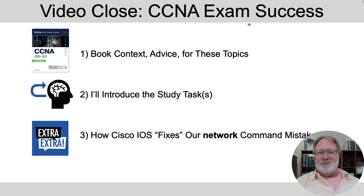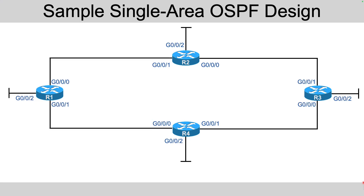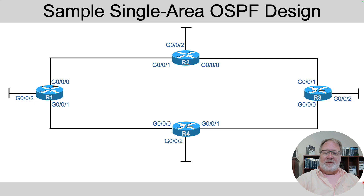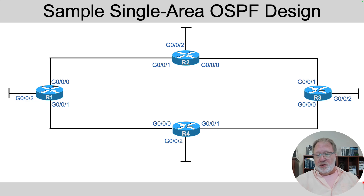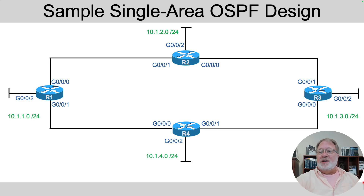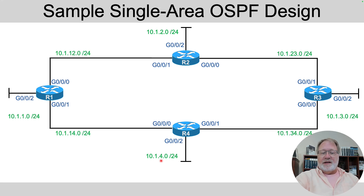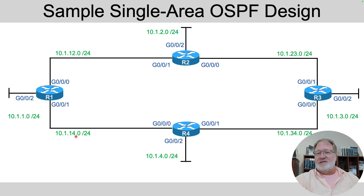Let's jump in and learn about basic OSPF configuration. Let me start by describing the topology. I'm going to have these four routers, and each router is connected to two others over an Ethernet WAN link, and each router has a LAN interface with no other routers connected. I'm going to show you the subnets first here in green. We've got these LAN subnets: 10.1.1.0, 10.1.2.0, 10.1.3.0, and 10.1.4.0. And then we've got subnets for the four WAN links: 10.1.12, 10.1.23, 10.1.34, and 10.1.14. The interface IDs are around there.